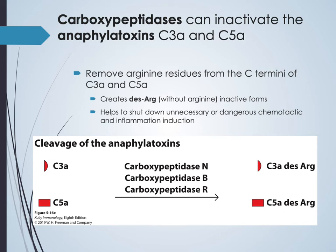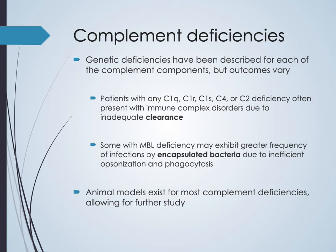Carboxypeptidases inactivate the anaphylatoxins C3A and C5A, providing additional regulatory control. Various mouse knockout models can be used to study individual complement component deficiencies. Natural mutations in complement genes exist in the human population.